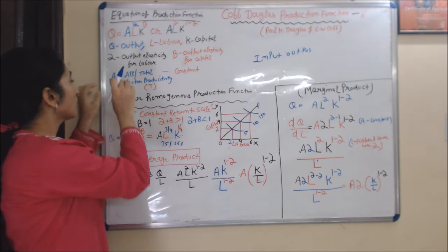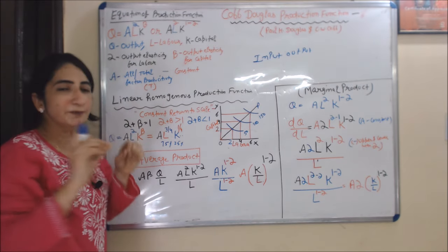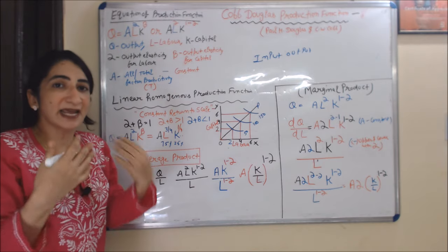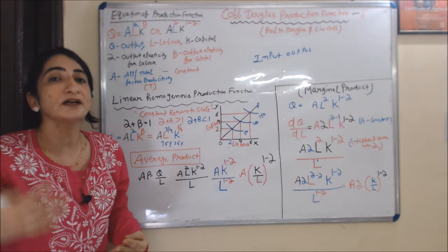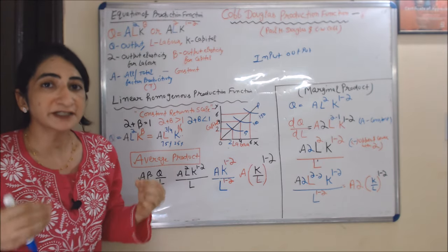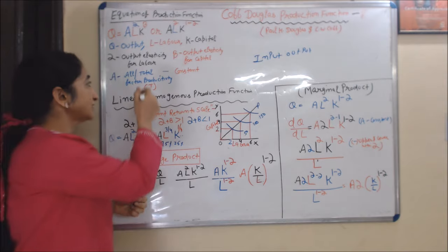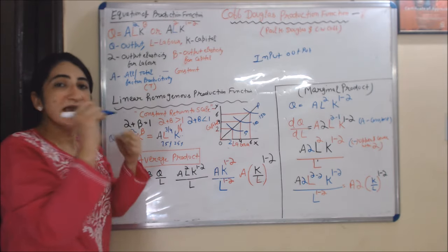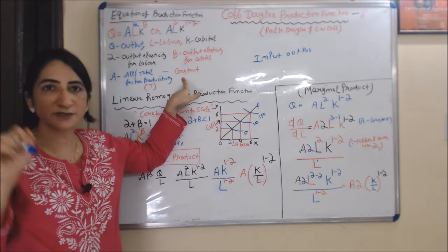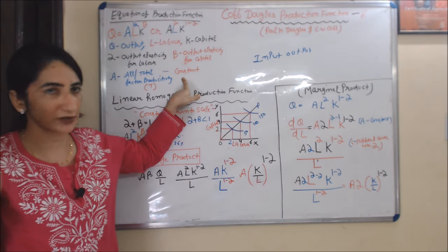A is all-factor productivity — or total factor productivity — which depends on technology. A is a constant in this production function.